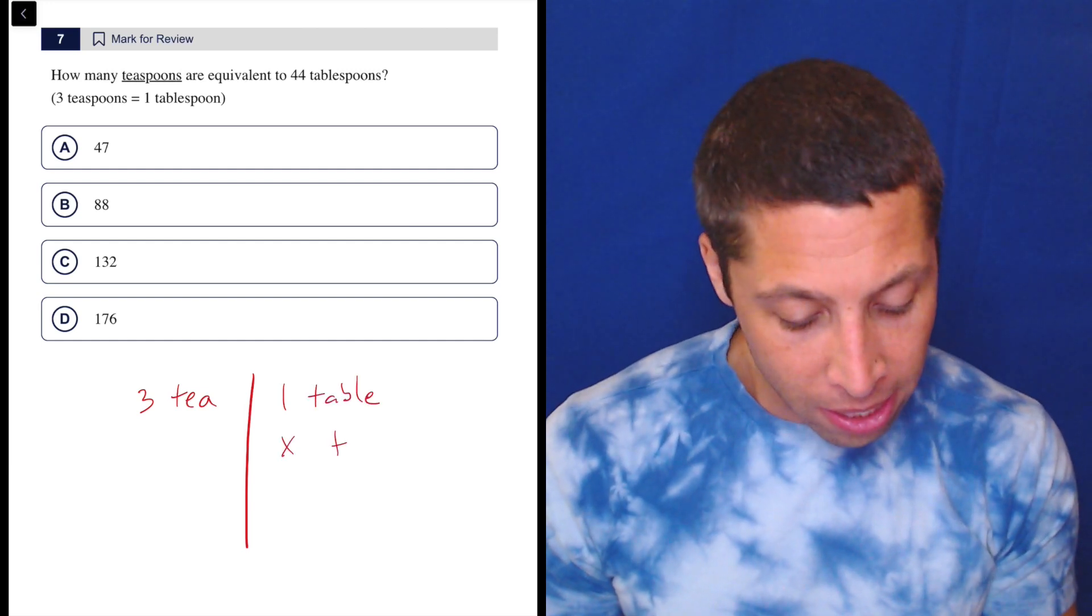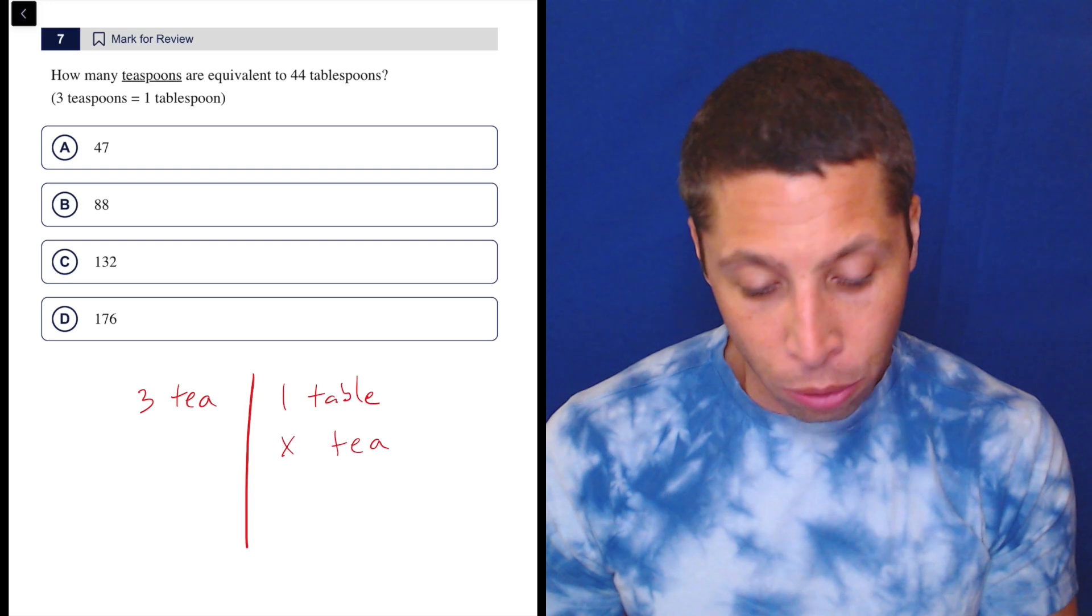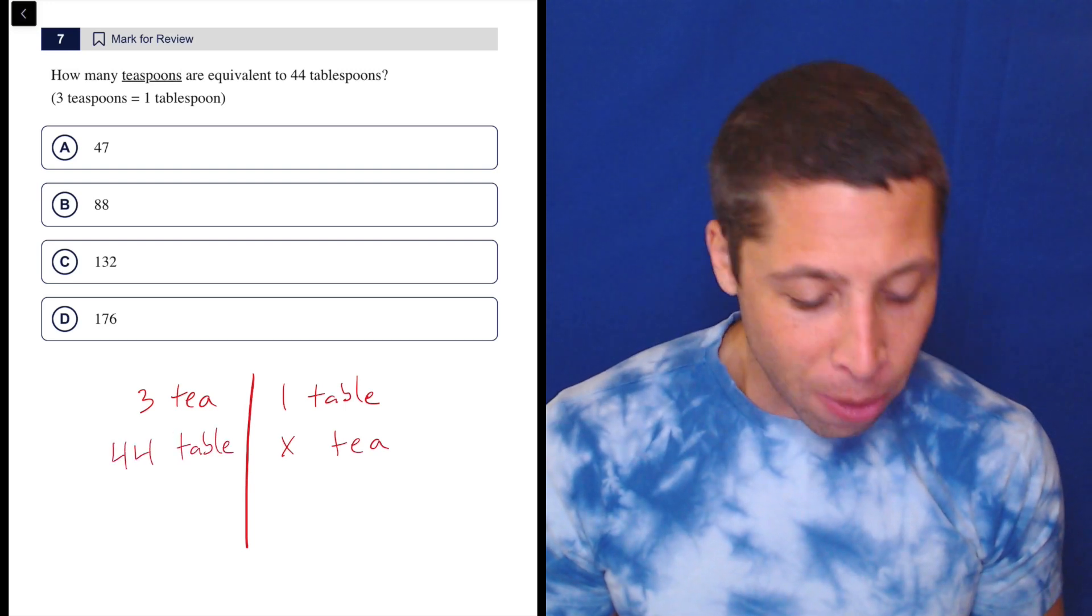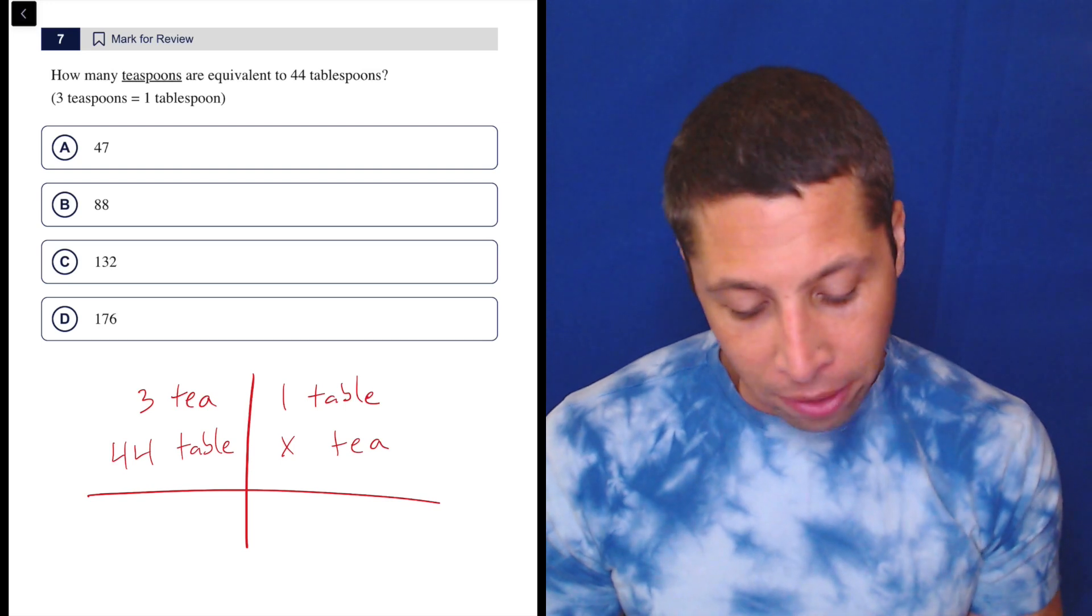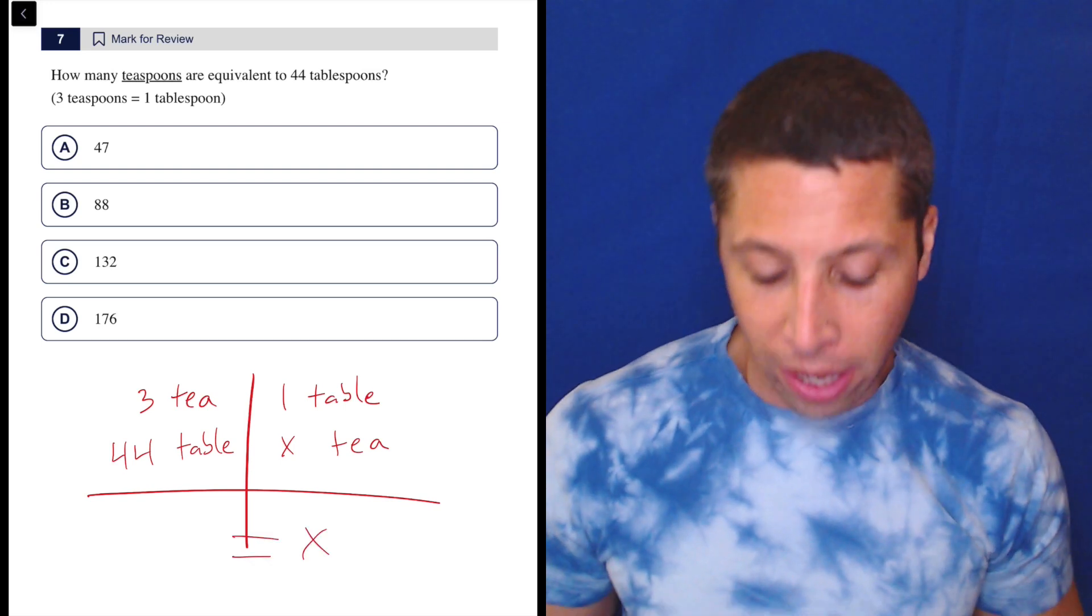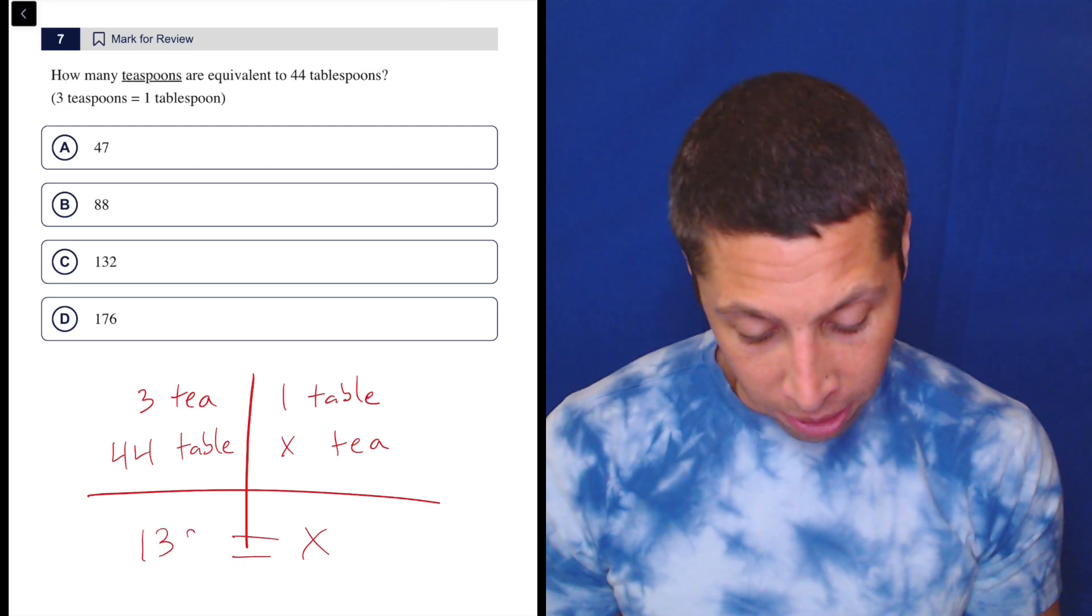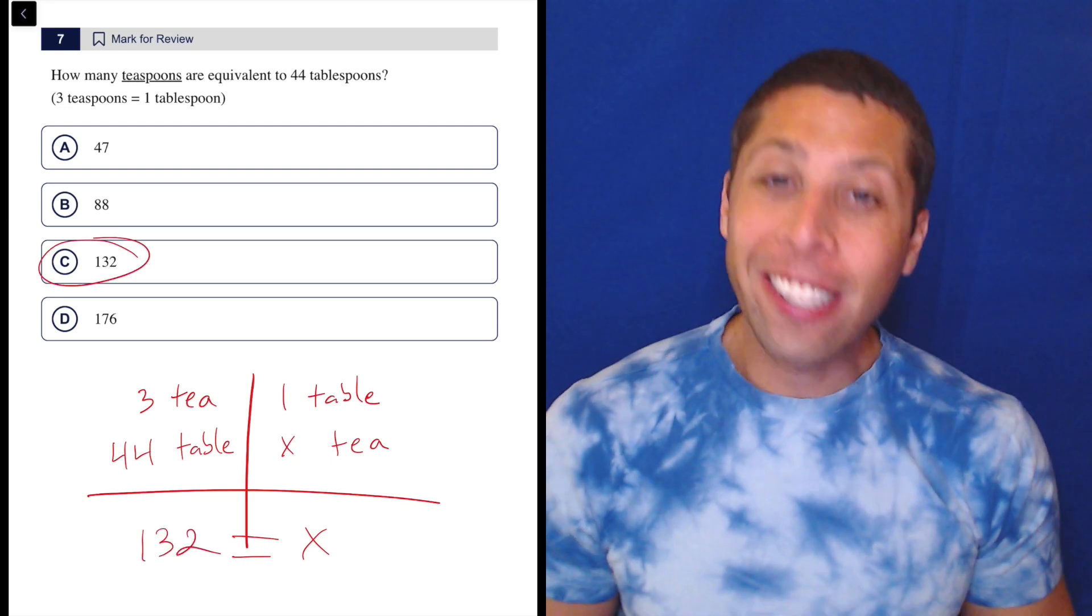So X teaspoons are equivalent to 44 tablespoons. Okay, great, not so bad. Most of you would have done this anyway. We multiply down the list, so X is equal to 3 times 44. 44 times 3 is 132. That's the answer.